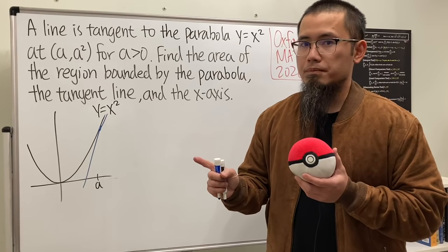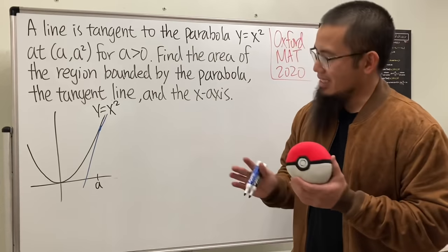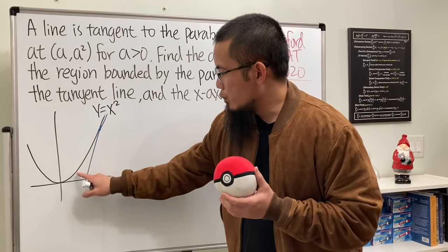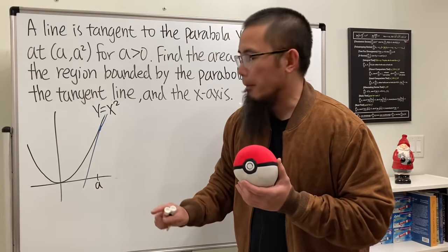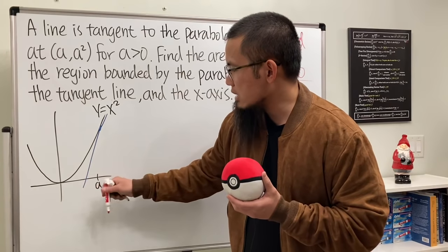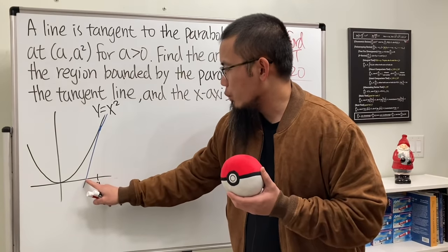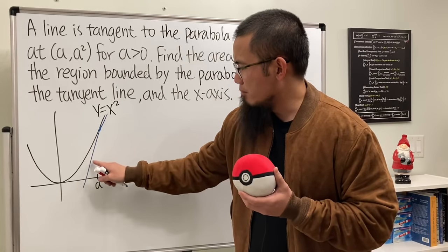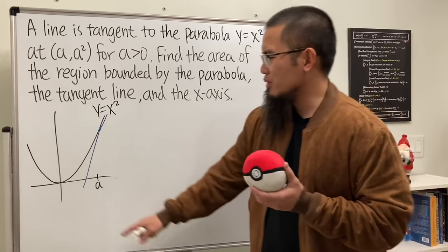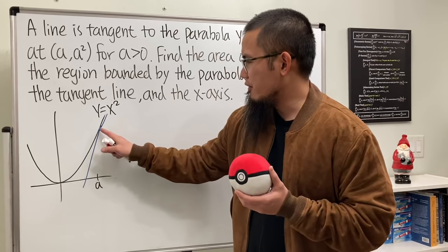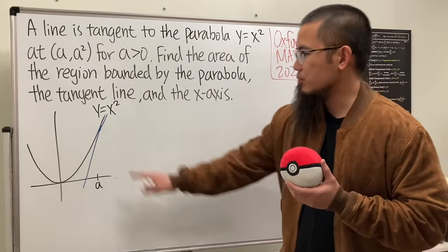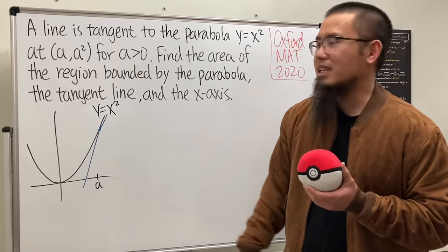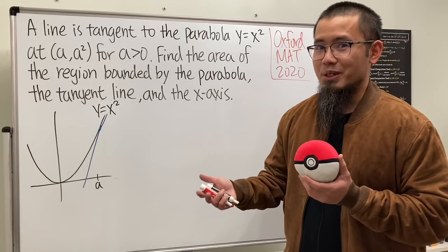Now we have two ways to do this — both use integrals. The first way draws rectangles vertically, but don't do that, because once we pass the tangent point we have to separate into two integrals, doing top minus bottom. Alternatively you could integrate from 0 to a and find the area of the triangle. Instead, I would like to draw the rectangles horizontally.